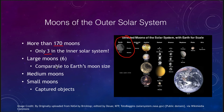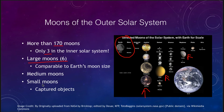In the outer solar system there are six large moons: four of them around Jupiter, one around Saturn — Titan — and one around Neptune — Triton. From the scale diagram you can see that they are comparable to the Earth's moon in size, and in fact most of them are actually a little bit larger than our own moon.